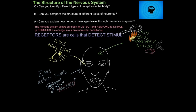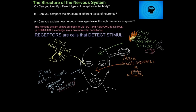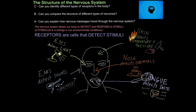Next up is your skin. Your skin contains two types of receptors: cells that can detect temperature or changes in temperature, and also changes in pressure. Your nose contains chemoreceptors — these are chemical-detecting cells that allow you to detect smell. Finally, your tongue also contains chemoreceptors, and these can detect specific chemicals linked to taste.